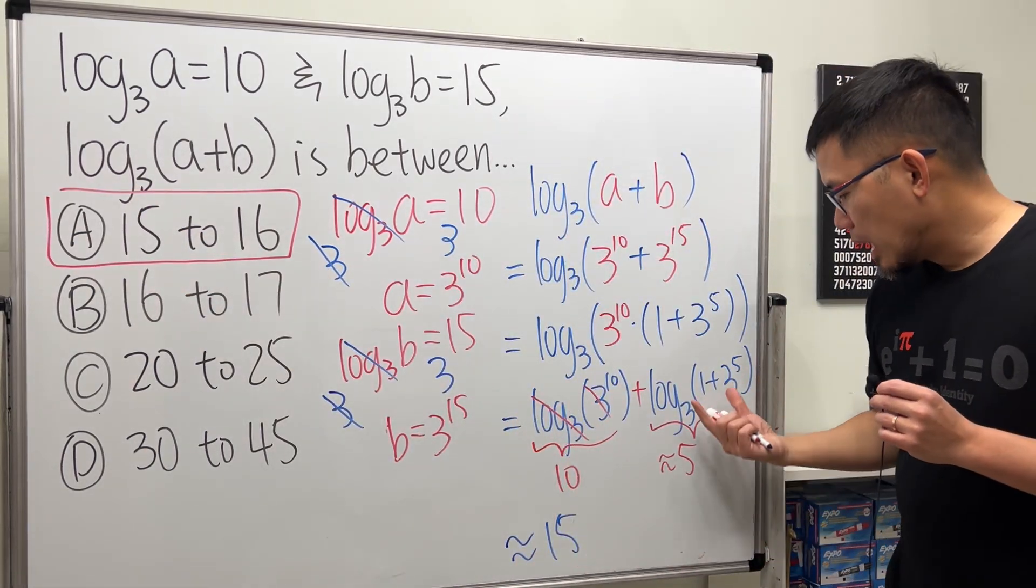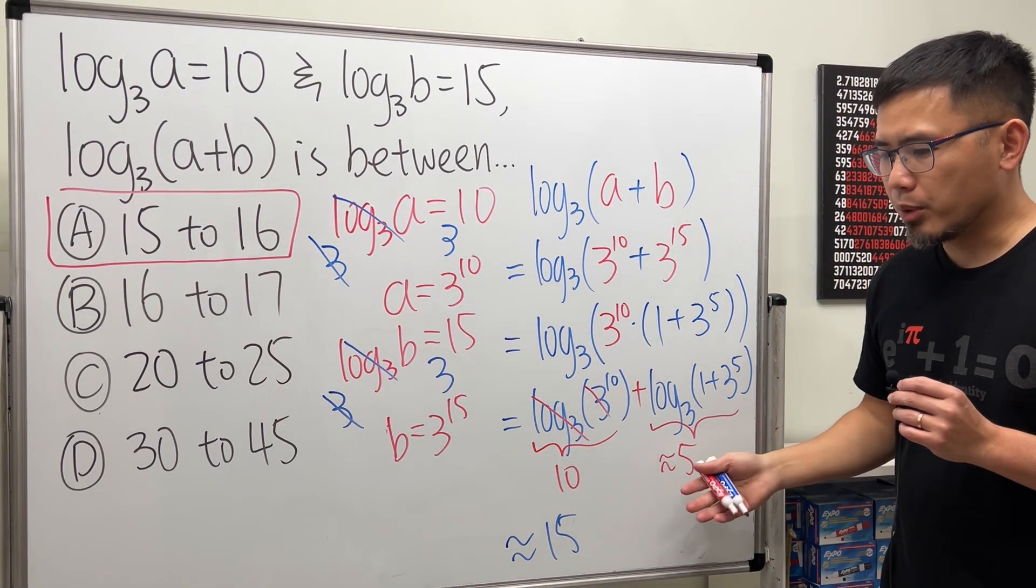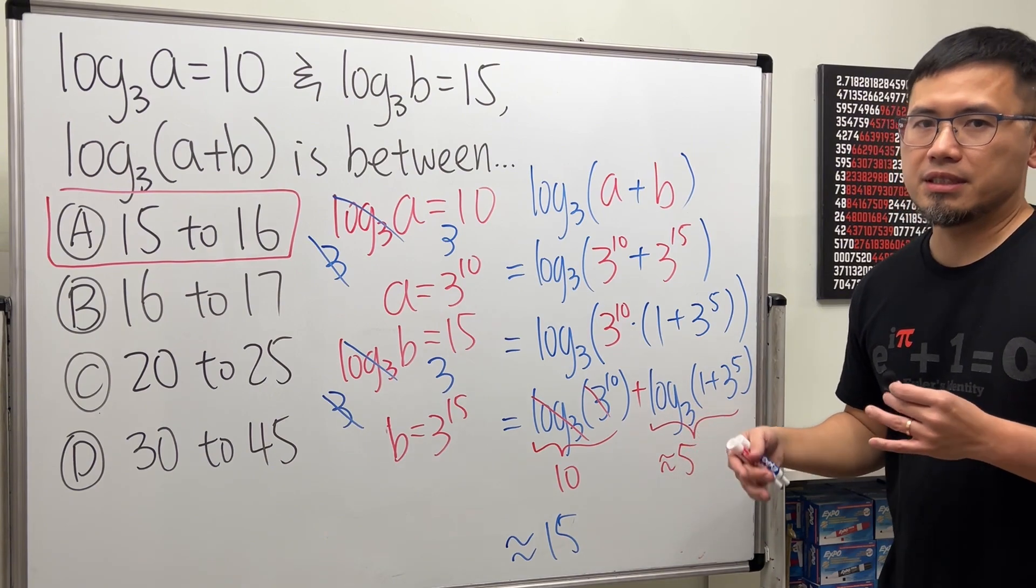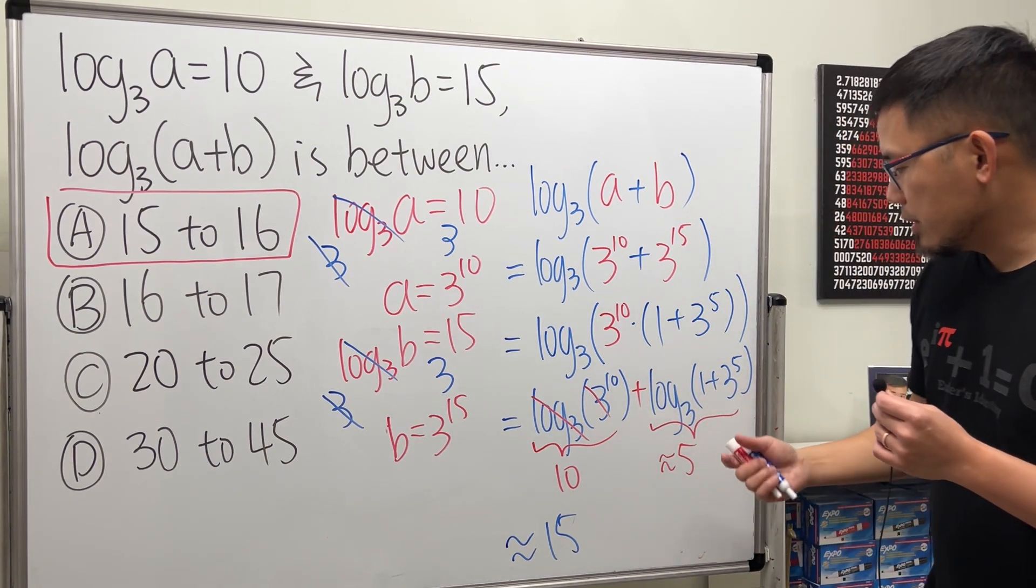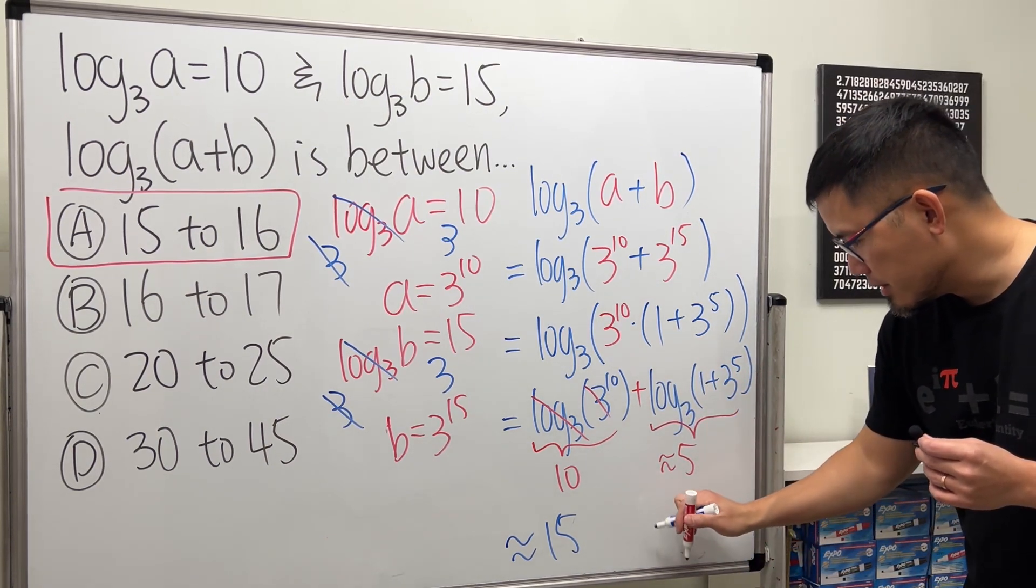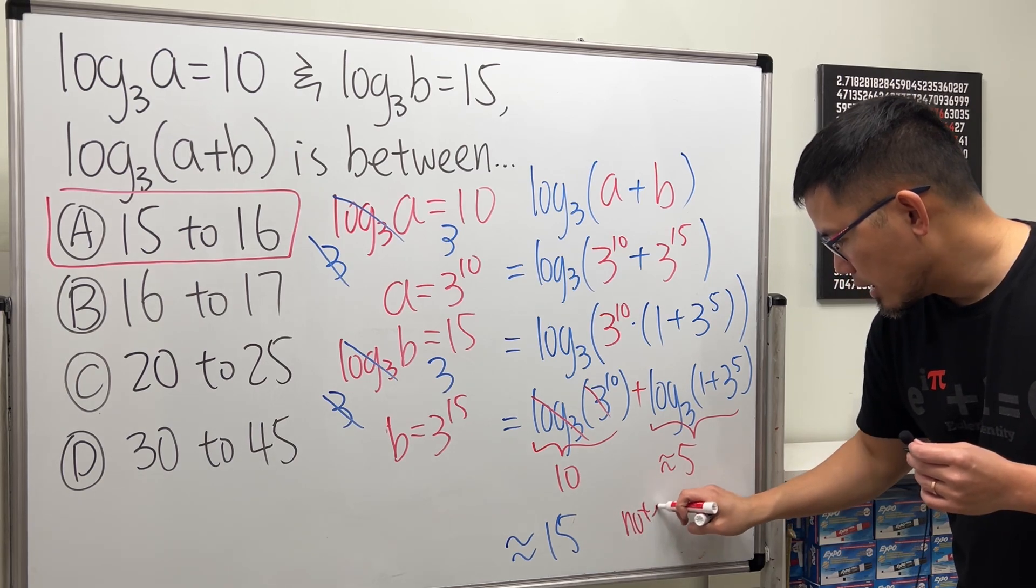So, now you might be wondering, how come this is just approximately 5 point something? How come this cannot be 6 point something, right? Well, the deal is because of the inside. Here is a note. Have a look.